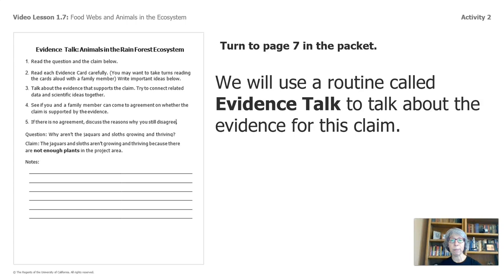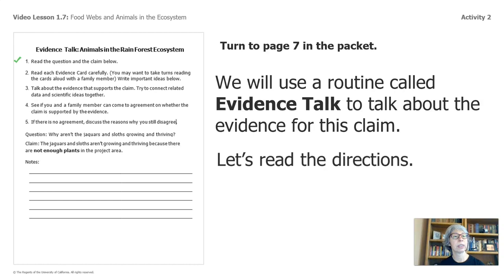Let's turn to page seven in the packet. We will use a routine called evidence talk to talk about the evidence for this claim. If we were in the classroom, we would be using evidence circles, but we're at home, so we're going to talk through this. Read the question and the claim. Read each evidence card carefully. You may want to take turns reading the cards aloud to a family member and write important ideas. Talk about the evidence that supports the claim and try to connect the related data and scientific ideas together. See if you and a family member can come to an agreement on whether the claim is supported by evidence. This is the heavy lifting work that scientists do all the time.